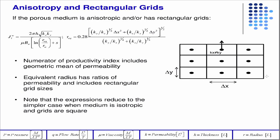So we didn't derive this, but here it is in the event that you have anisotropy or rectangular grids. So now you have a Kx and a Ky. There's a formula for the equivalent radius in terms of anisotropic, so different Kx, Ky, and different Delta X, Delta Y.